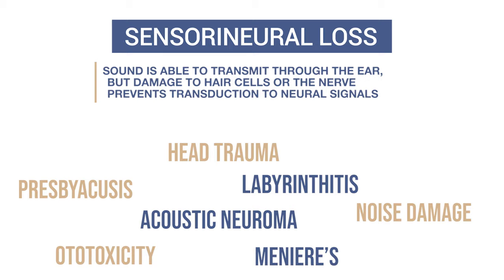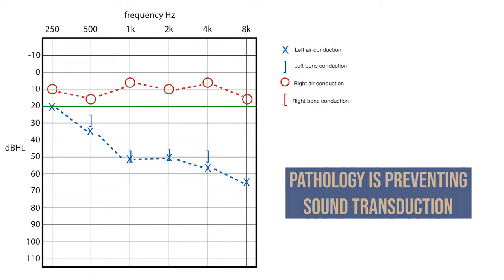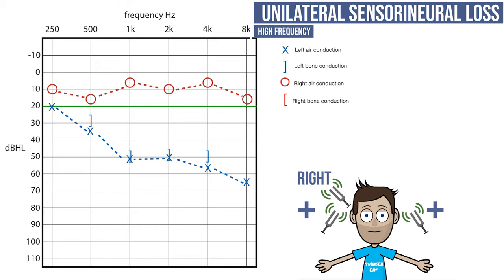A patient produces an audiogram as before, demonstrating hearing loss in their left ear, particularly in the higher frequencies. Once again the test is repeated for bone conduction. However, this time bone conduction is also deficient, demonstrating that there must be a problem with cochlea or nerve and making this unilateral sensorineural hearing loss. In this instance, Rinne's would be positive bilaterally but Weber's would lateralize to the right. If you see an audiogram like this, you must first rule out an acoustic neuroma and organize an MRI scan.